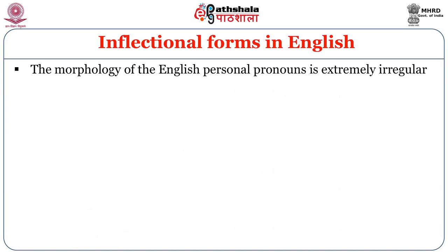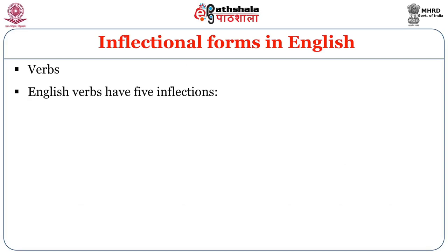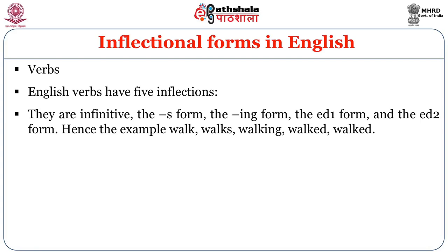The morphology of English personal pronouns is extremely irregular. In the subjective case it's 'I,' in the objective case it's 'me'; 'we' becomes 'us.' The epithetic possessive of 'I' is 'my' and the predicative possessive is 'mine.' 'We' has objective case 'us,' possessive 'our,' and predicative possessive 'ours.' English verbs have five inflections: the infinitive, the -s form, the -ing form, and two -ed forms. For example: 'walk,' 'walks,' 'walking,' 'walked,' 'walked.'